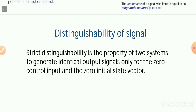Regarding distinguishability of signals: the strict distinguishability is the property of a system to generate identical output signals only for zero control input and zero initial state vector. If two systems produce identical output when no control input is applied and the initial state vector is zero, this formation is treated as the distinguishability of the signal.